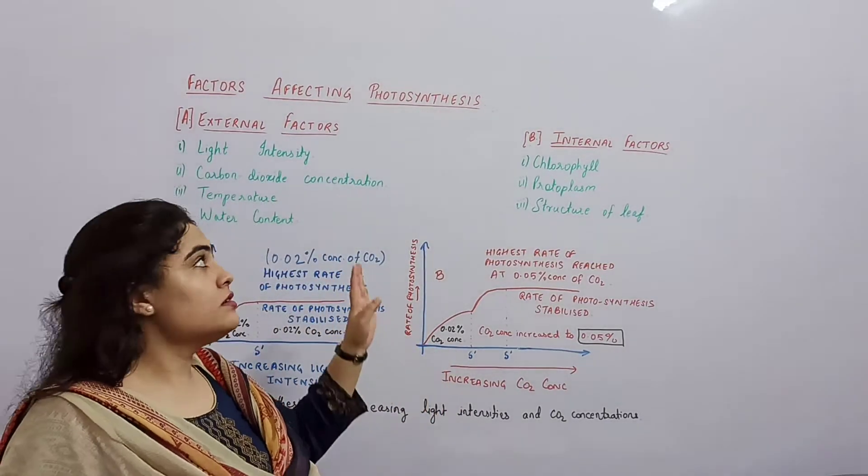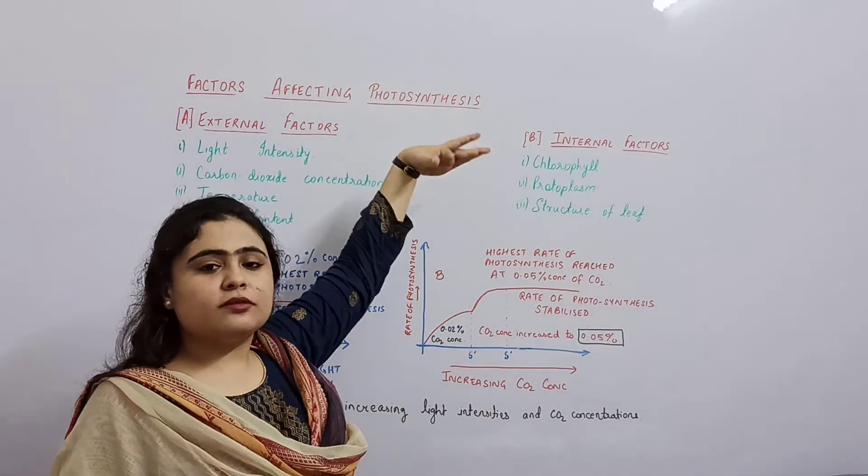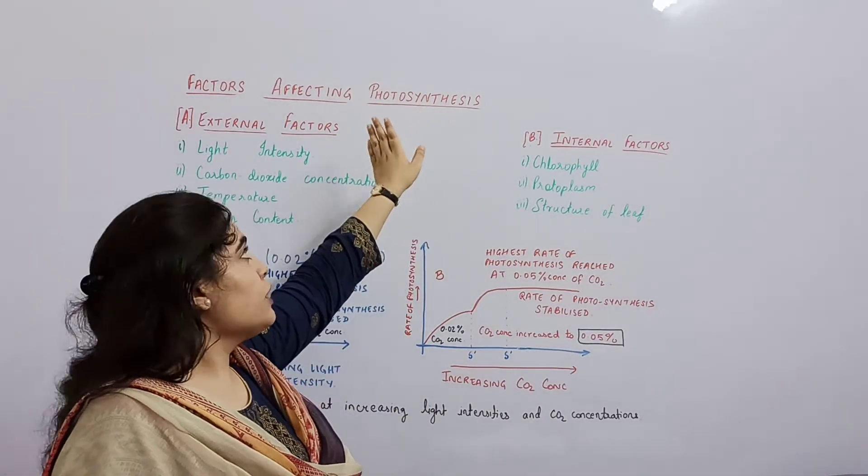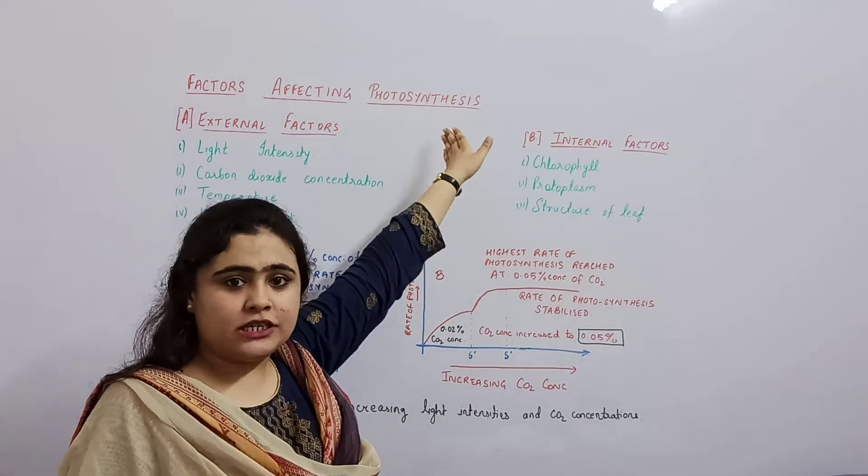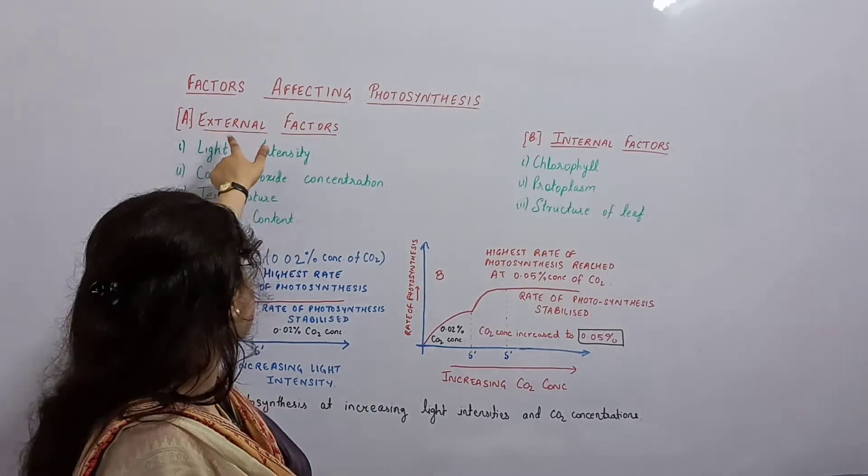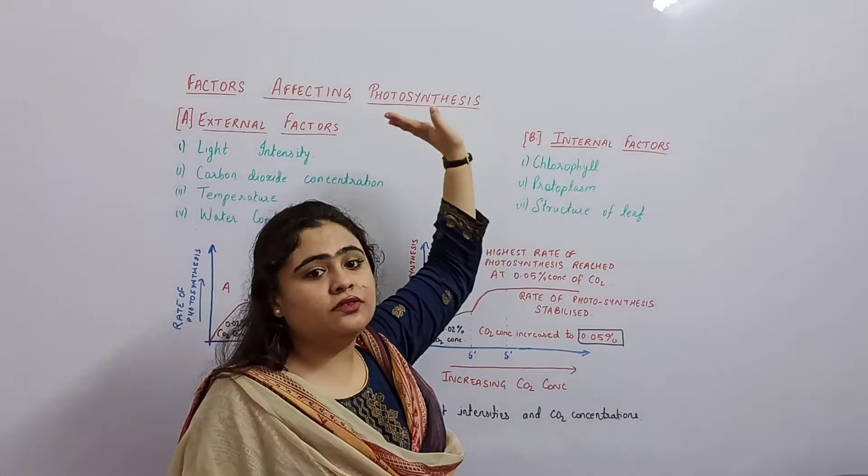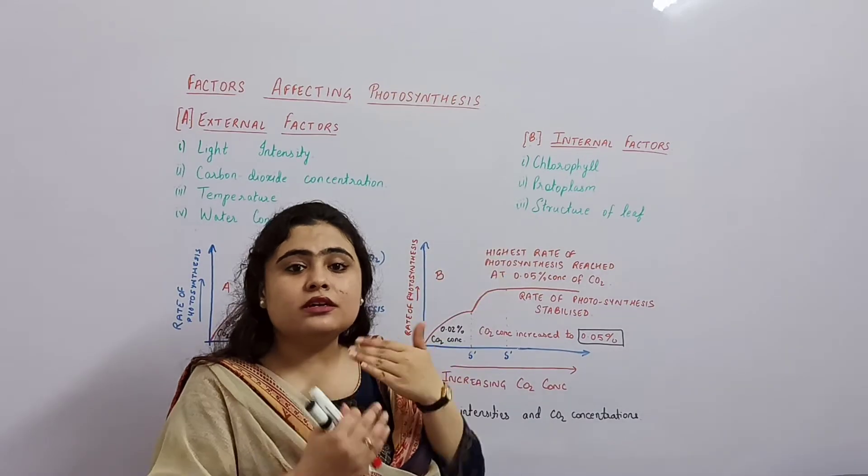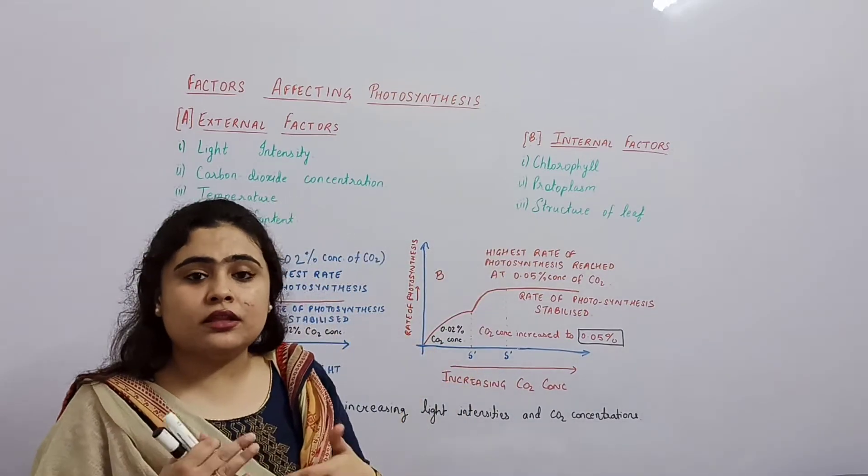Today we will discuss factors affecting photosynthesis. We have discussed about photosynthesis, making of glucose in the presence of light. So what are the factors, external factors and internal factors, which govern the rate of photosynthesis? How much speed the photosynthesis will be, how much time it will take.